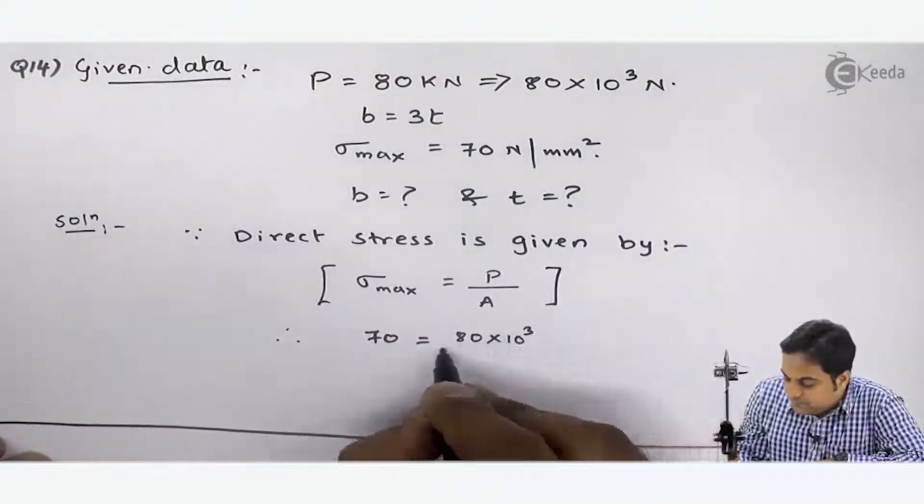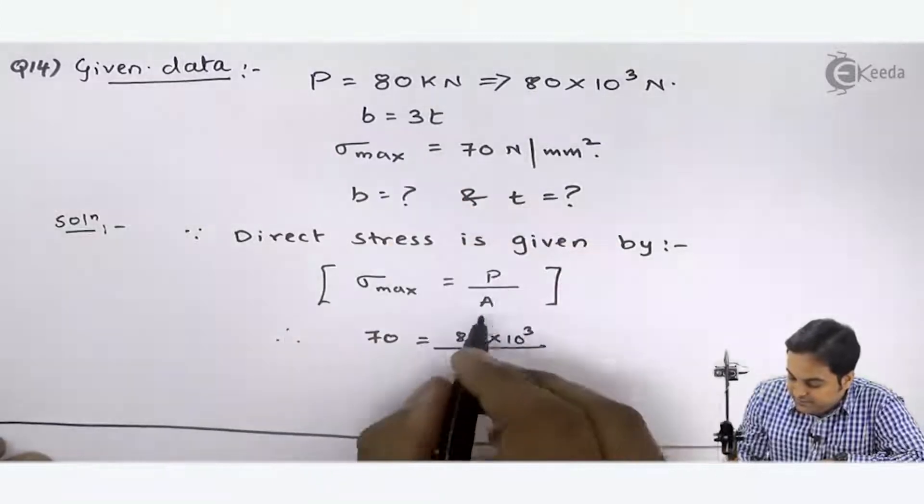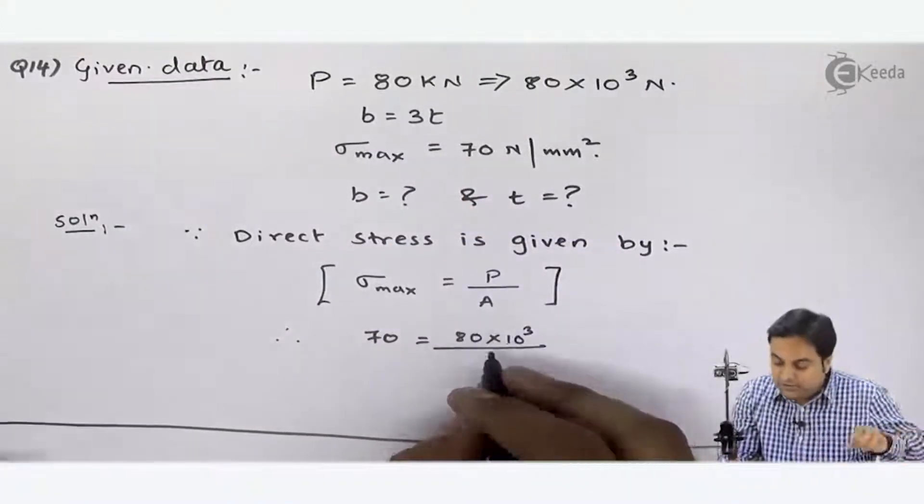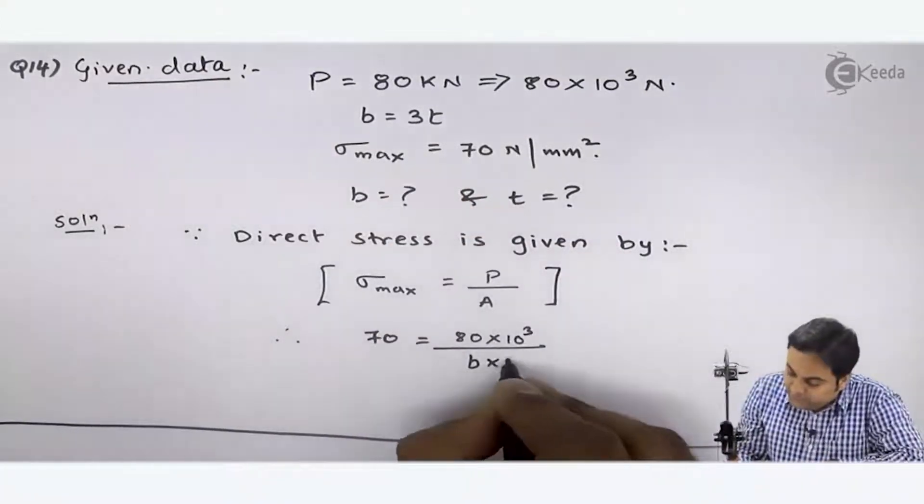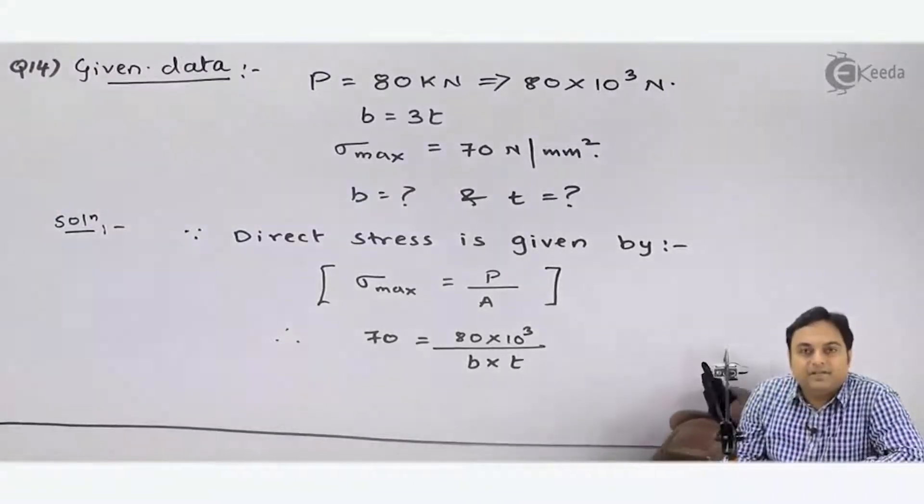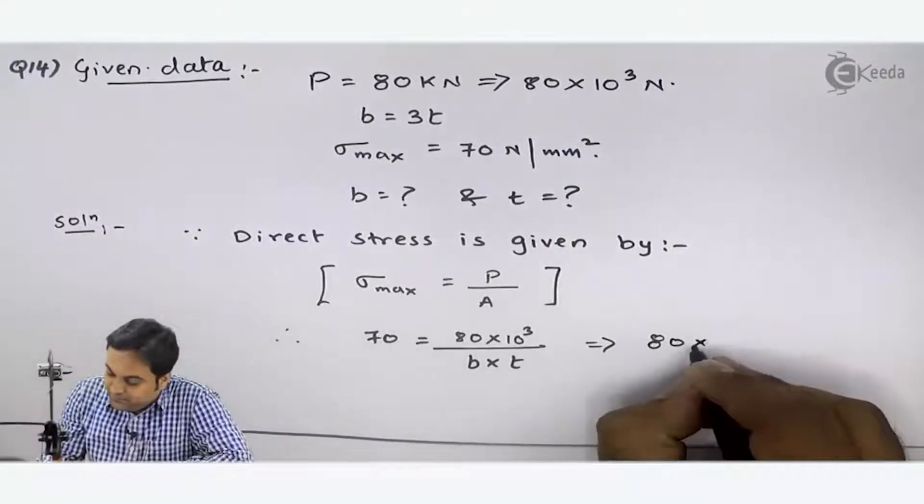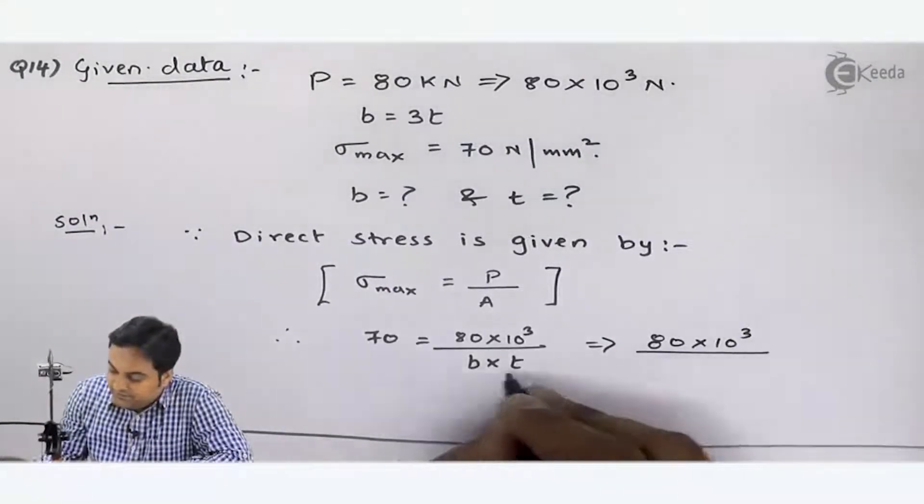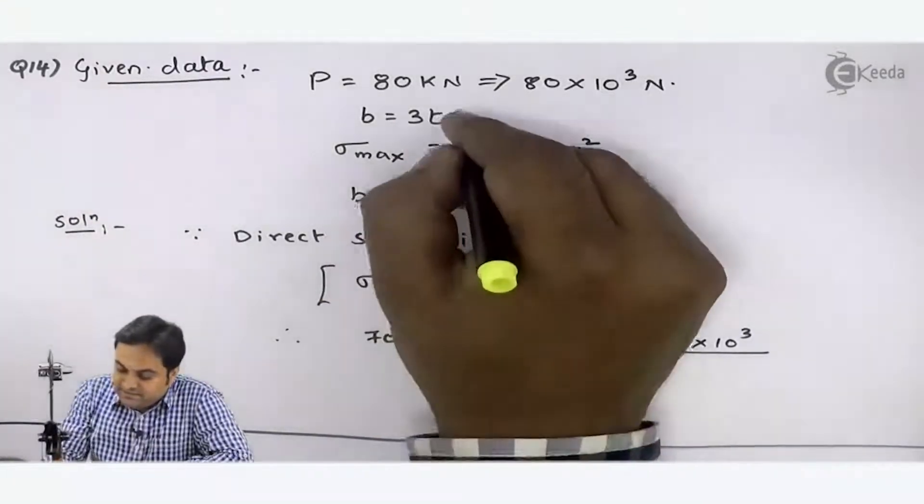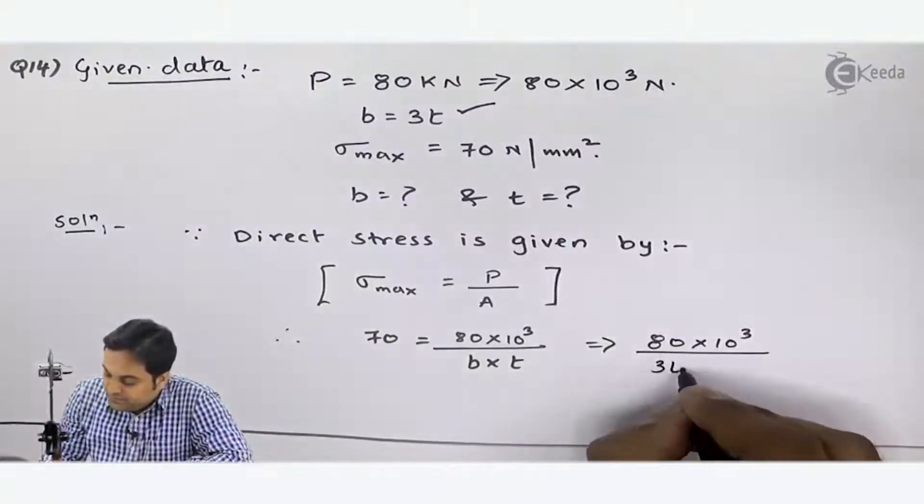This becomes 80 × 10³ divided by—B is given as 3T—so it is 3T × T. Therefore, I have 80 × 10³ divided by 3 divided by 3 × 70.